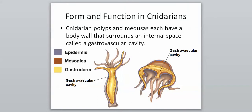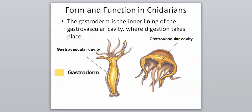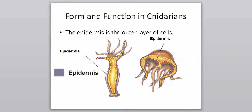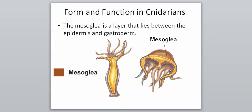Cnidarian polyps and medusas each have a body wall that surrounds an internal space called a gastrovascular cavity. This large area is basically where food comes in — it's the most important part for food and digestion. The gastroderm is the inner lining of the gastrovascular cavity where digestion takes place. They have this big open space in order to digest their food. They also have the epidermis, which is the outer layer of cells. The new word is mesoglea, a layer that lies between the epidermis and the gastroderm — basically filler material between the digestion area and the outer layer.